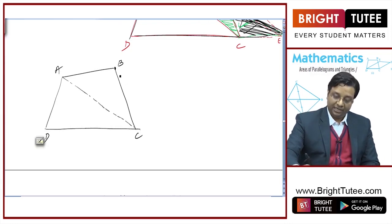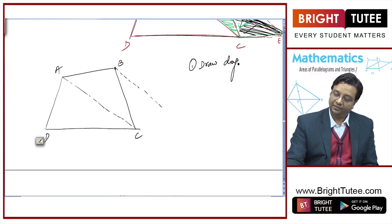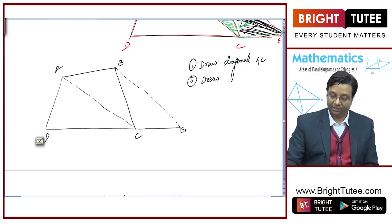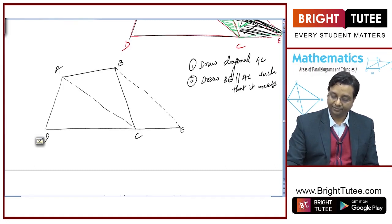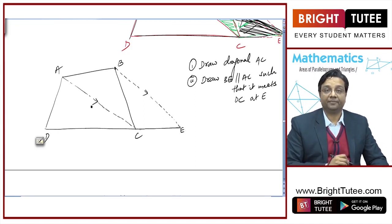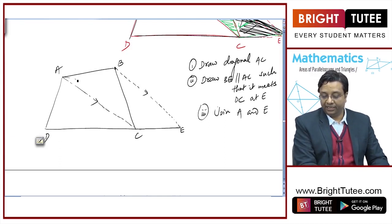Now, from corner B, I will draw a line parallel to AC. So let me write: draw diagonal AC. Then draw BE parallel to AC such that it meets DC extended at E — or in other words, draw a line from B parallel to AC which meets DC extended at E. So now this line is parallel to AC. And once you do these two steps, the third step would be to join A and E.